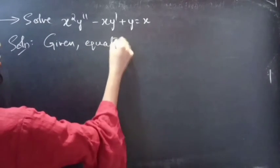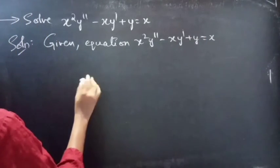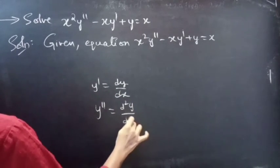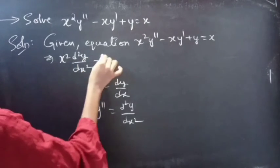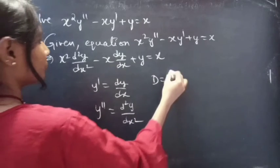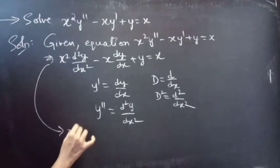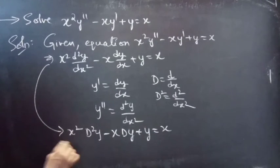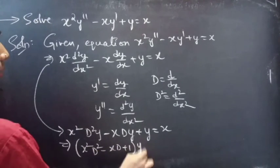The given differential equation is x squared y'' minus x y' plus y equals to x, where y' is dy/dx and y'' is d²y/dx². We can write this as x² (d²y/dx²) minus x (dy/dx) plus y equals x. Taking y common from the LHS terms, we get (x²D² minus xD plus 1)y equals x.